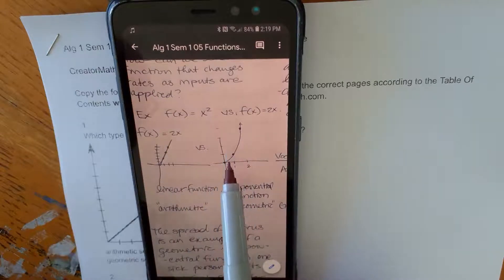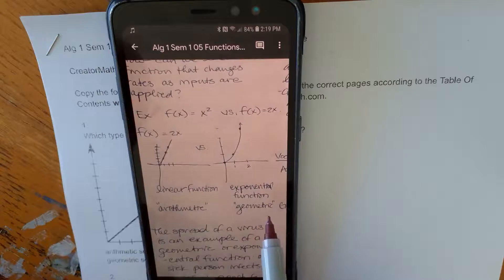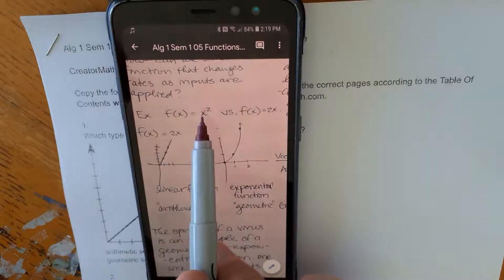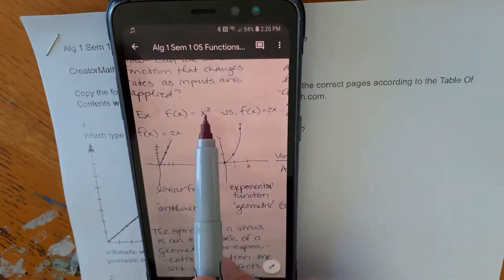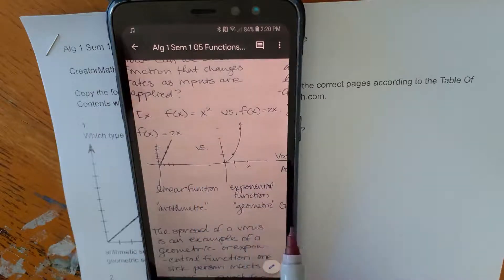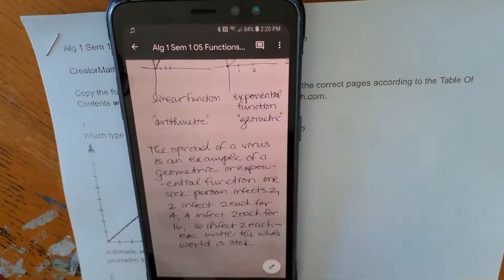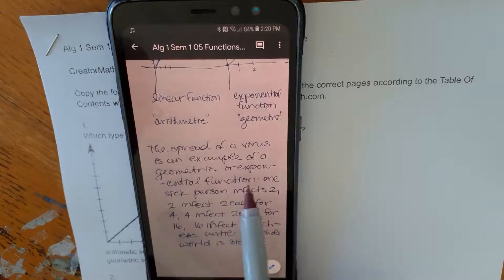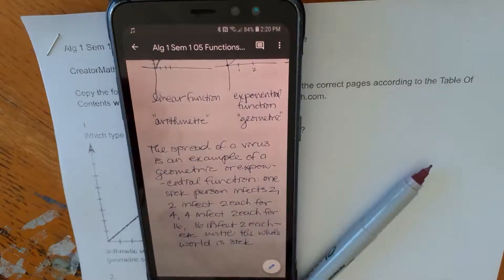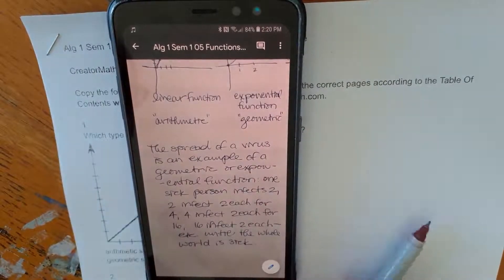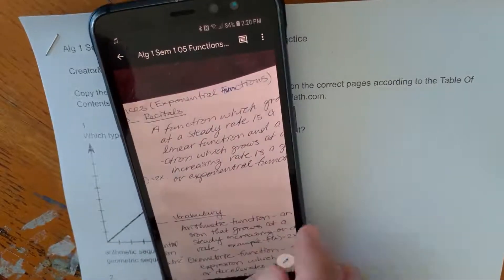So the 2x function here is a line. The x squared function here is a parabola, right? So a geometric sequence which moves up more quickly. And I might have actually picked a different one for the geometric sequence, but I don't know if I would have picked a parabola. But this one is raised to a power and therefore it goes up more quickly as we start to move through the domain range. The spread of a virus is an example of a geometric or exponential function. One sick person infects 2, okay? Sorry about that. Got distracted.